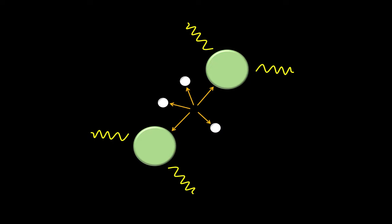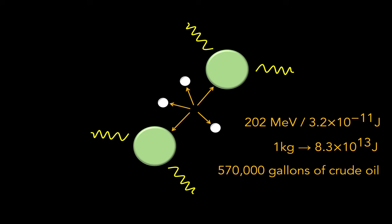Now, every atom of uranium-235, say, that undergoes fission releases about 202 mega electron volts of energy, which is about 3.2 times 10 to the minus 11 joules. Now, this in itself is very small, but considering how many uranium atoms there are in just a moderately sized sample, just one kilogram of the stuff is able to release 8.3 times 10 to the 13 joules, assuming that it all undergoes fission, of course, which is the energy extractable from around 570,000 gallons of crude oil, which is a lot of oil.